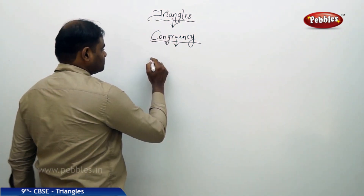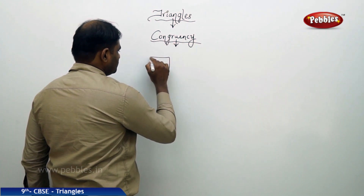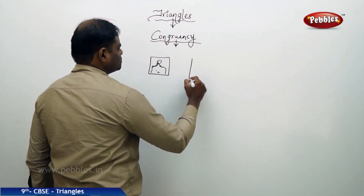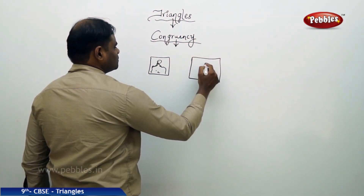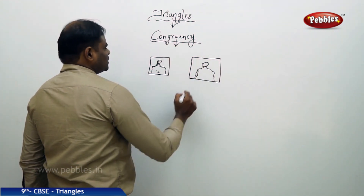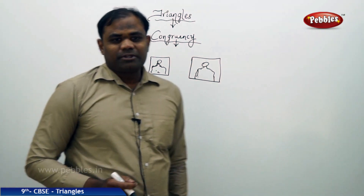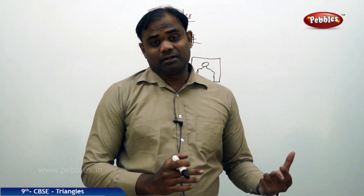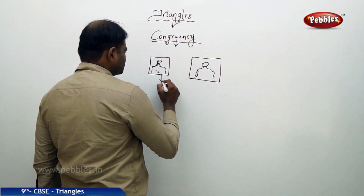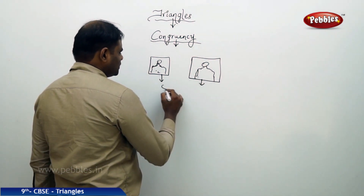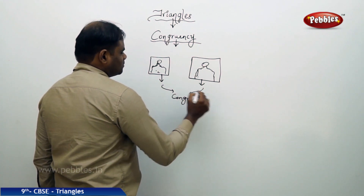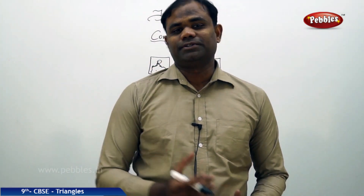Say for example, I have taken a picture of mine on a mobile phone — taken the picture twice. This is my picture one, and this is my picture two. When I take the picture immediately one after the other, I see that both pictures are similar, quite similar. Therefore, pictures clicked immediately one after the other are said to be congruent, because they are exactly the same as each other.